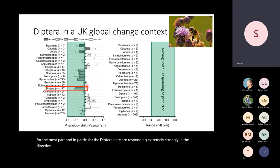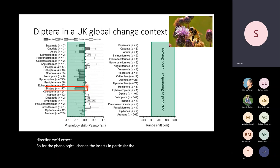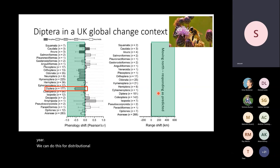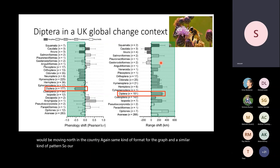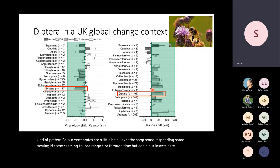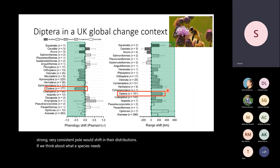Some of the less well-recorded non-insect invertebrates are also a bit all over the place. But the insects for the most part, and in particular the Diptera, are responding extremely strongly in the direction we'd expect. For distributional changes, we'd predict a positive range shift — moving north in the country. A similar pattern emerges: vertebrates are a little all over the shop, but our well-recorded insects, and again our Diptera, show a very strong, very consistent poleward shift in their distributions.